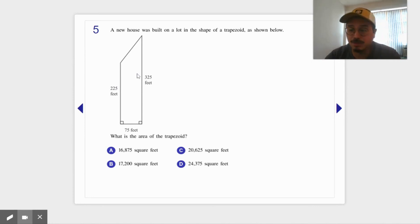Let me see, 225 plus 325, times - you really should use a calculator for this - divided by 2 is 20,625.